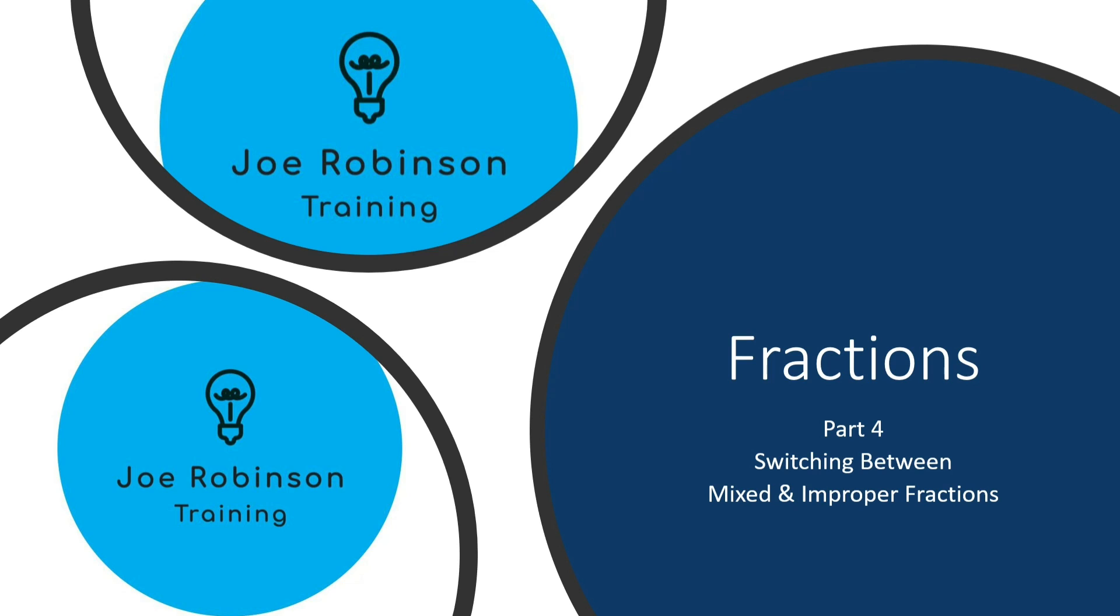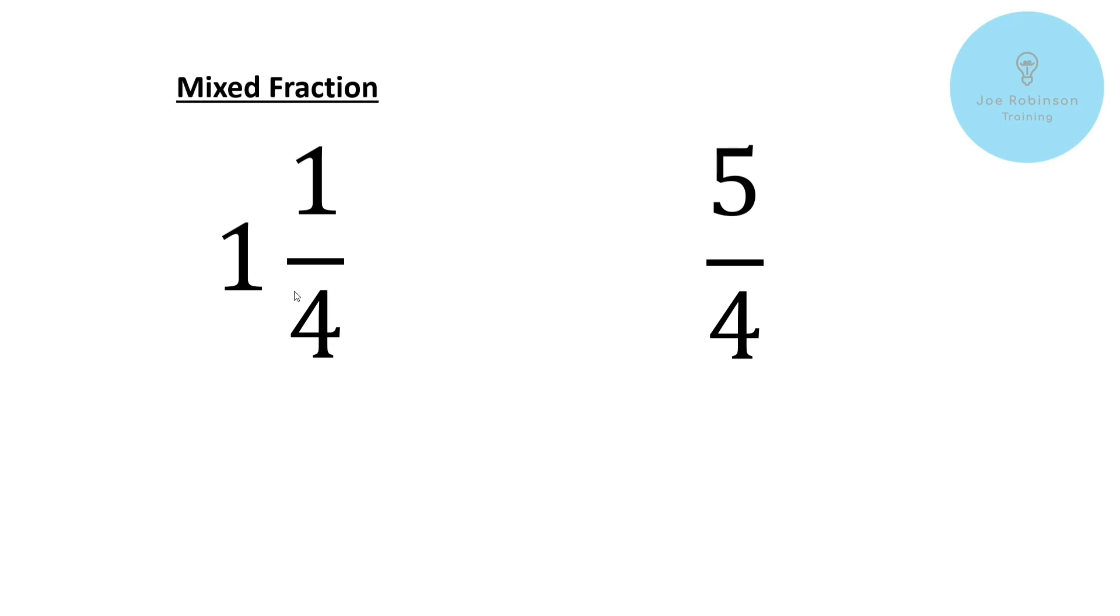You may remember from our previous video that we defined what these numbers were. On the left here we've got what's referred to as a mixed fraction - a whole number and then a fraction making it mixed. And then over here we've got an improper fraction. It's called improper because with fractions we normally have a larger number on the bottom and a smaller number at the top. But here we've actually got a large number at the top making this fraction improper.